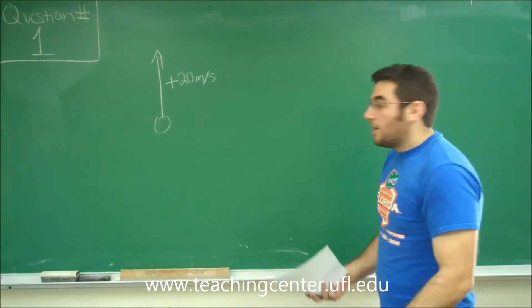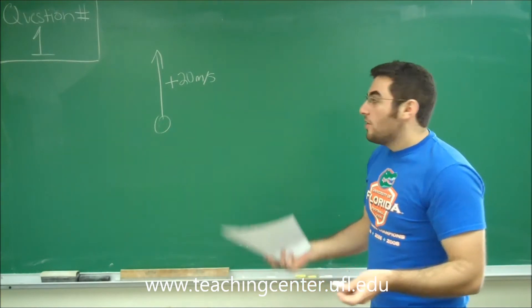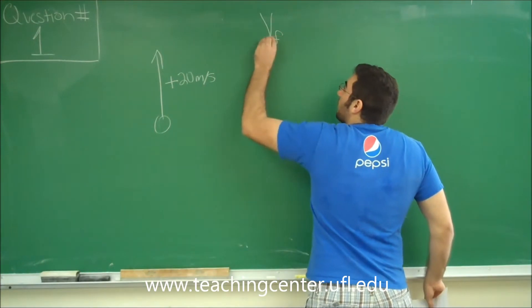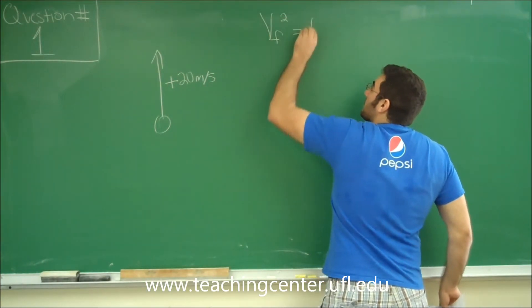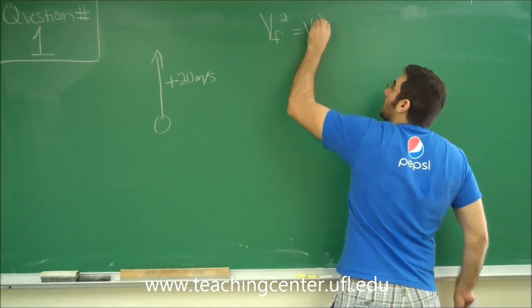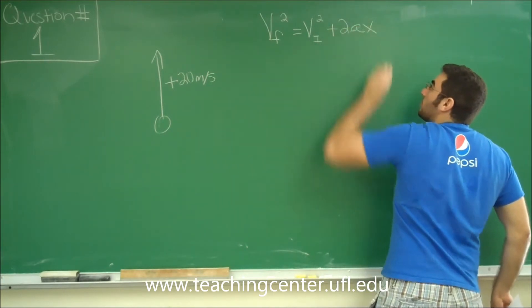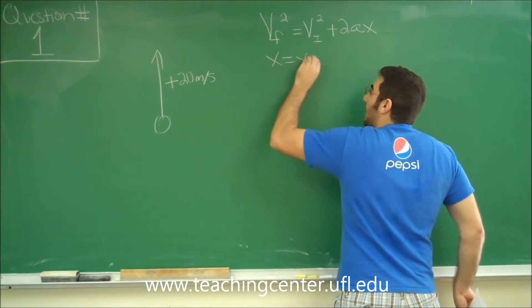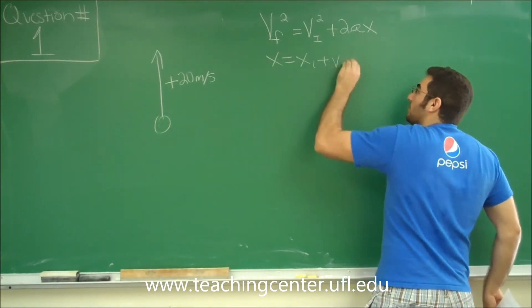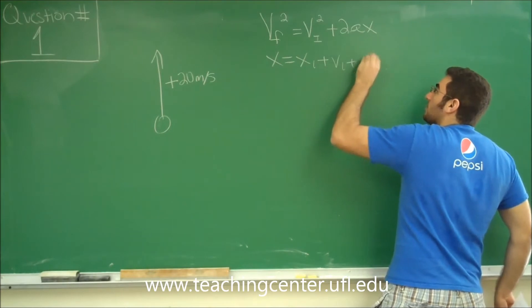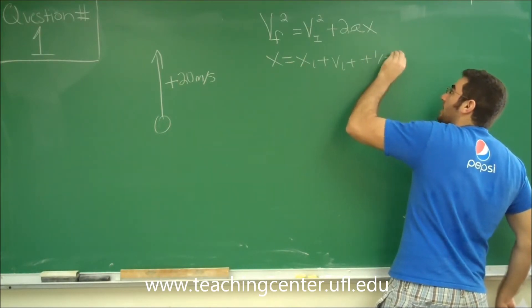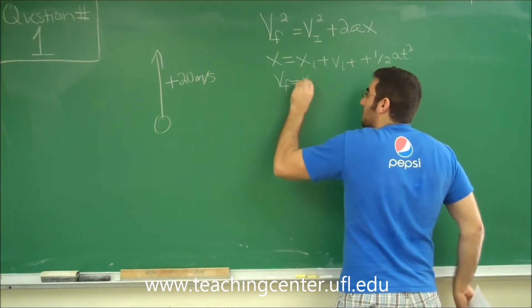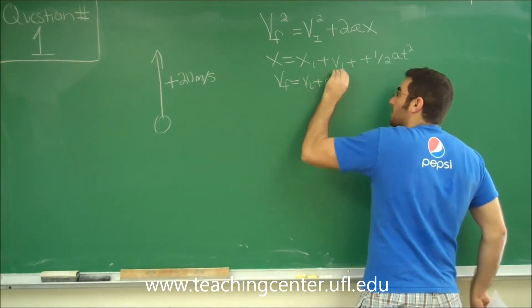So when we look at all of our linear equations, we have our list of five equations that we go through. We have final velocity squared equals initial velocity squared plus 2ax. We have x equals x initial plus v initial t plus 1 half at squared. Final velocity equals initial velocity plus acceleration times time.